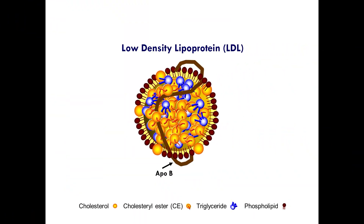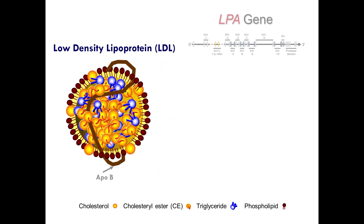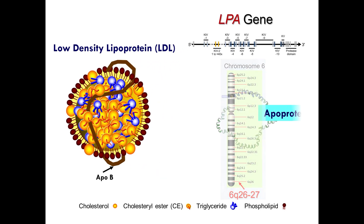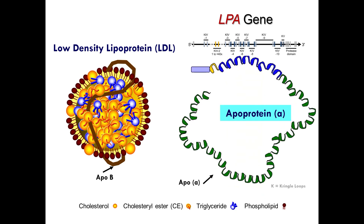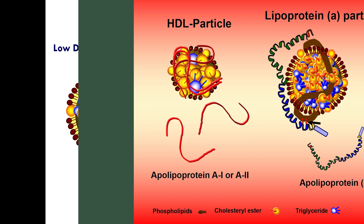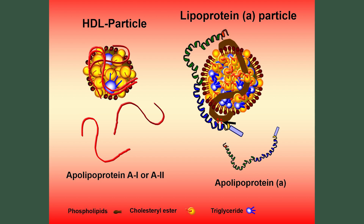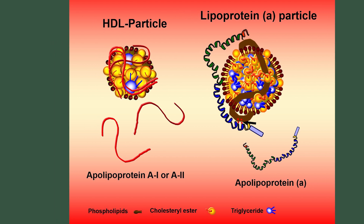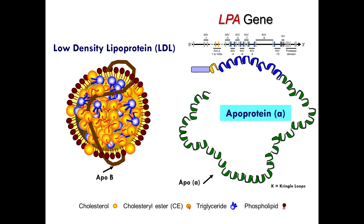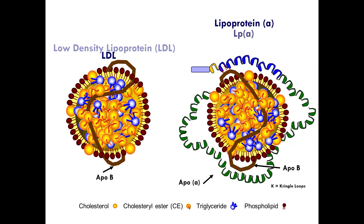If you took an LDL particle and attached to it another surface protein that binds to the ApoB, and if you call that other protein apoprotein little a — meaning small case 'a', not a capital A — that is lipoprotein little a. There is great confusion on this: lipoprotein capital A refers to an HDL particle; those are the apoproteins structurally found on HDLs. We're talking about little a. So LDL plus apoprotein little a — voilà — that is what a lipoprotein little a particle is.